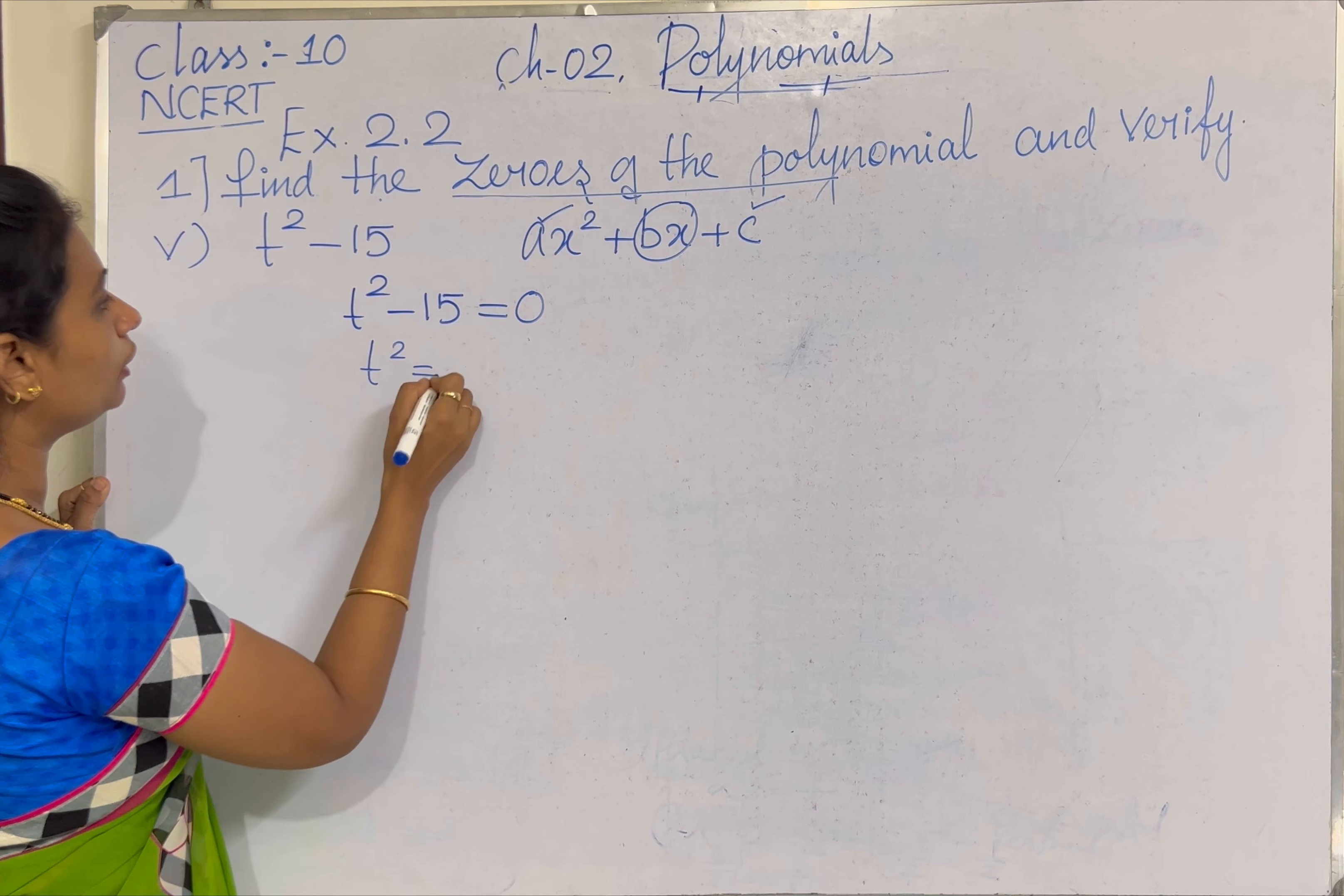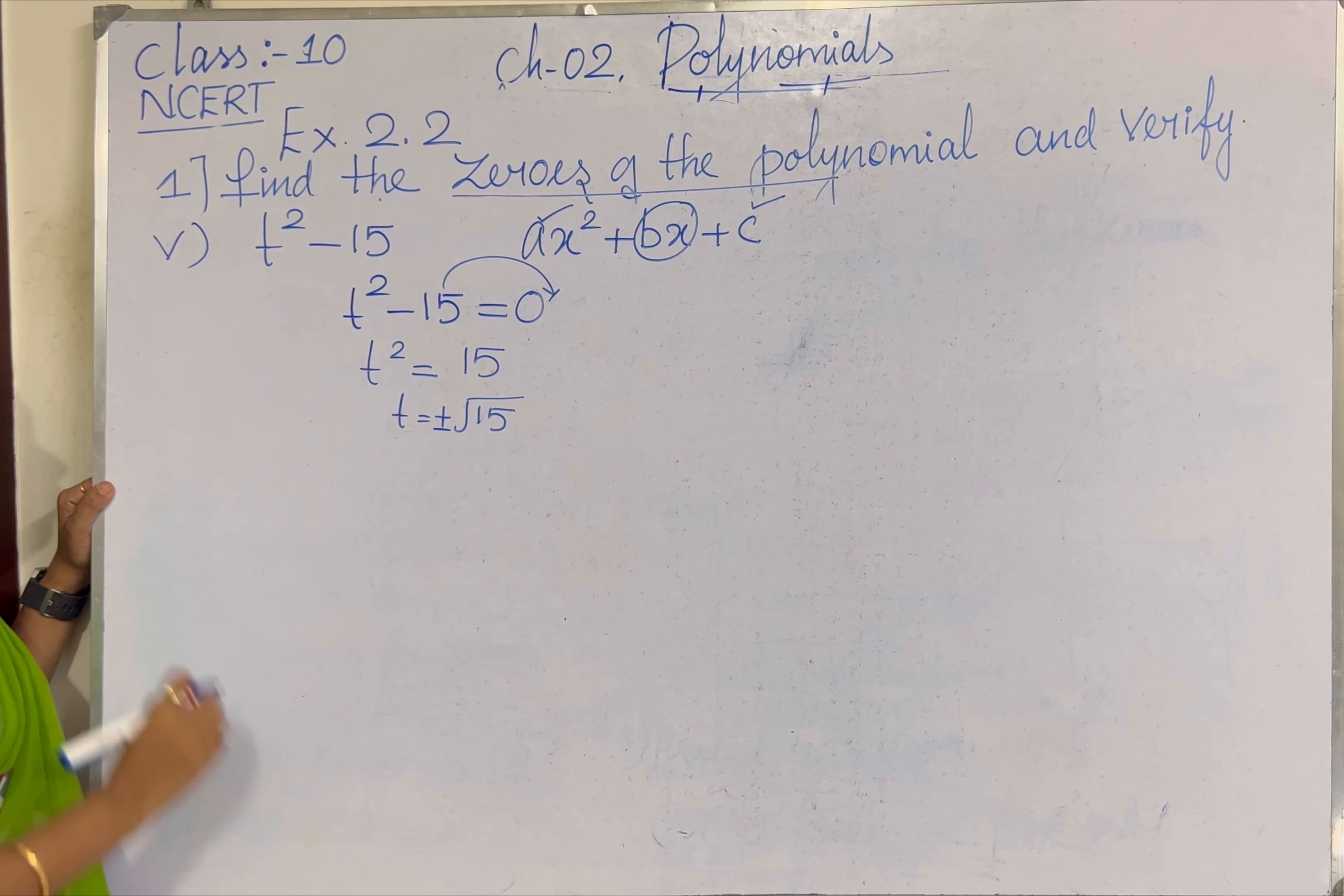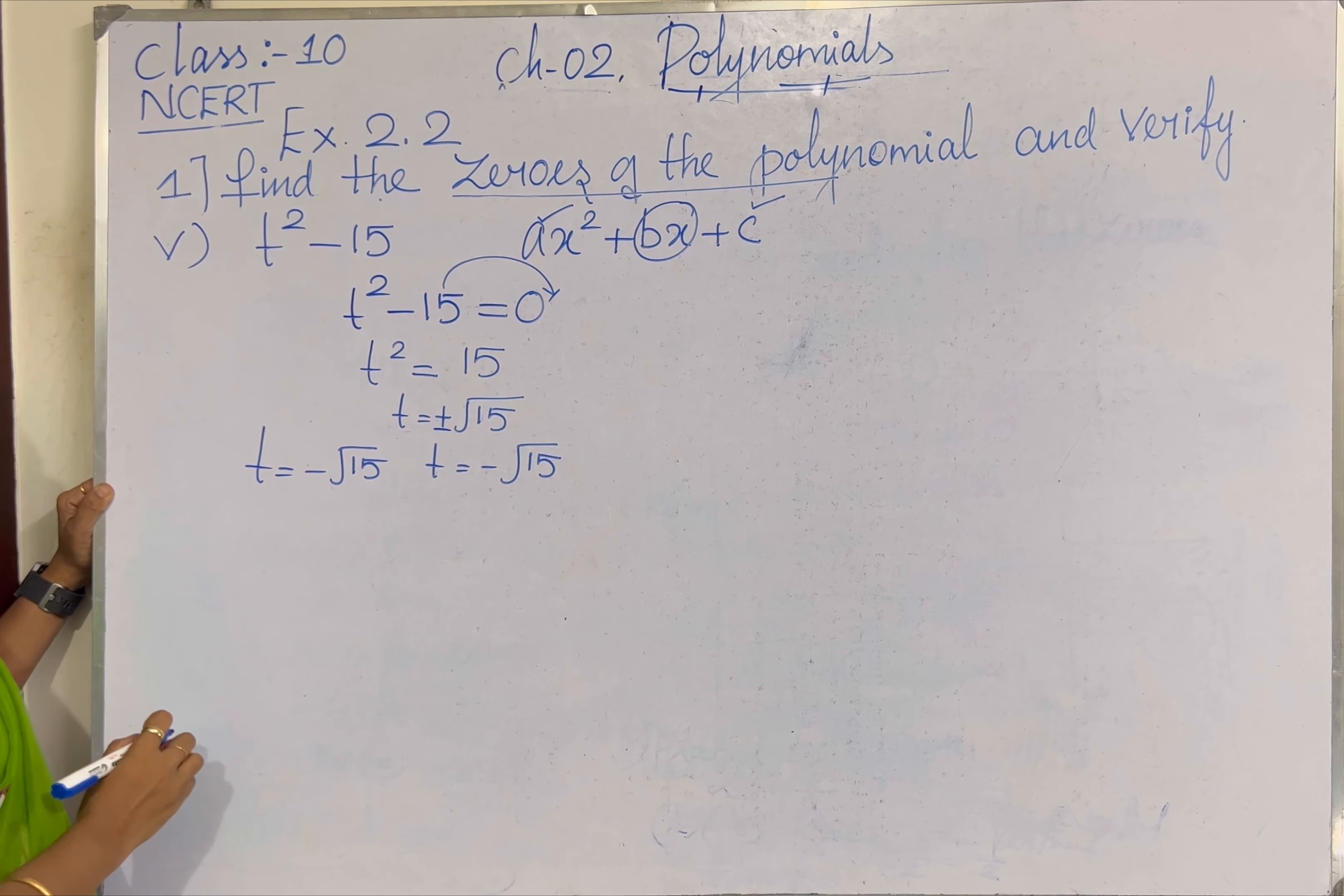T² is equal to, taking minus 15 to the other side, so we will get plus 15. So T equal to square root of 15. Since it is plus or minus root 15, T value will be minus root 15 and plus root 15. Alpha equal to minus root 15 and beta equal to plus root 15.